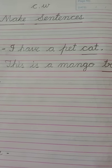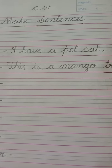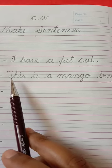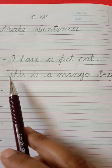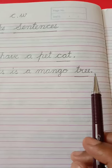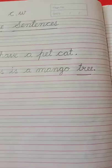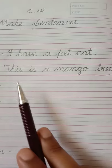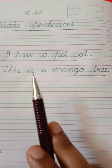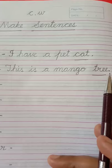Children, do you remember the three things I said at the beginning of the class? We have to begin a sentence with a capital letter — here I began the sentence with capital letter T. You have to keep a full stop at the end of the sentence. And the words should be arranged in proper order to make complete sense. 'This is a mango tree.'